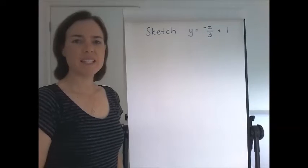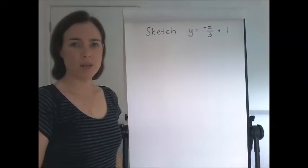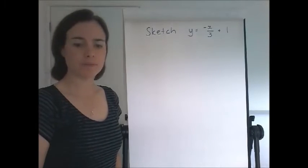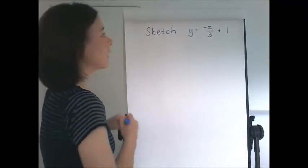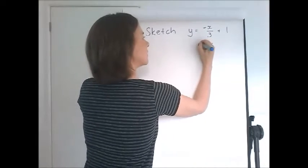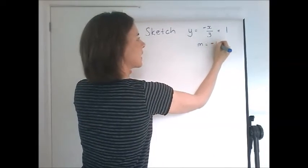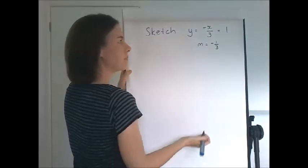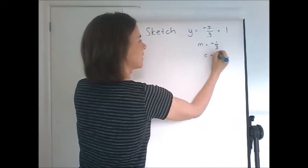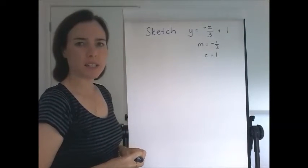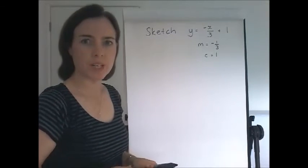Right, now our next example, another line which we're going to sketch, is negative x over 3 plus 1. The gradient here is the number that's multiplied by x, negative 1 over 3. And the y-intercept is 1. Now I might draw the axes up and then come back to you. I'll be back in a sec.